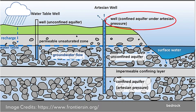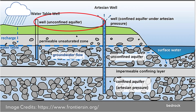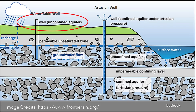An aquifer formed under the ground can be unconfined or confined. When we dig a well penetrating a confined aquifer, we call it an artesian well. And when we dig a well penetrating an unconfined aquifer, then it is called a water table well. As aquifer is the major source of water, it forms a major study of groundwater hydrology.